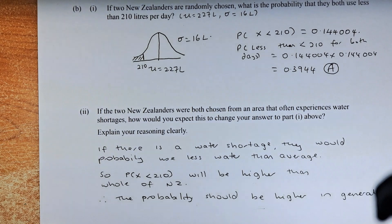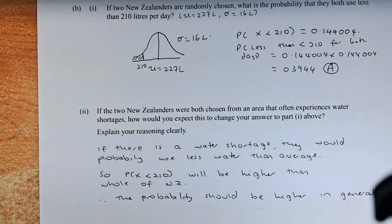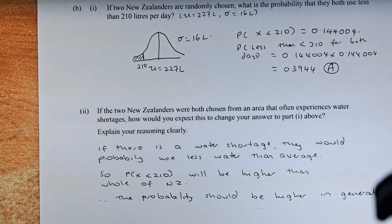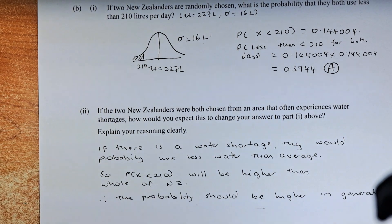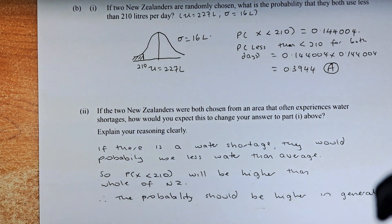If the two New Zealanders were chosen from the area that often experience water shortage, how would you expect this to change to the answers in part one above? Explain your reasoning.